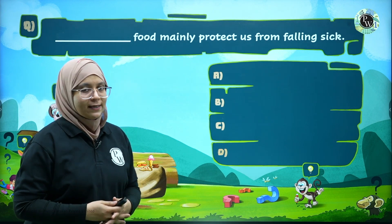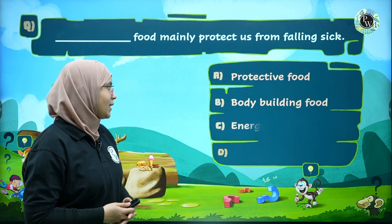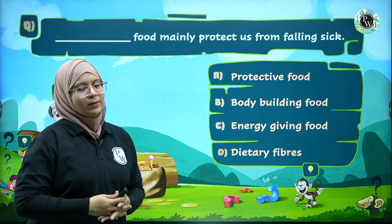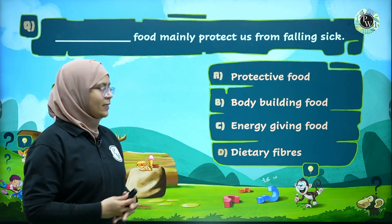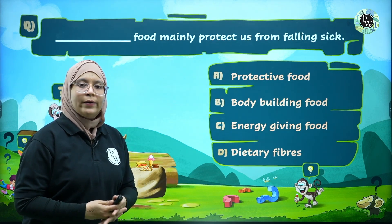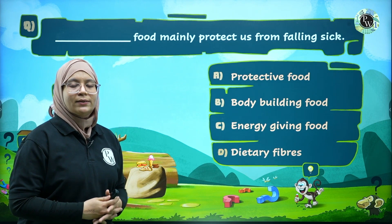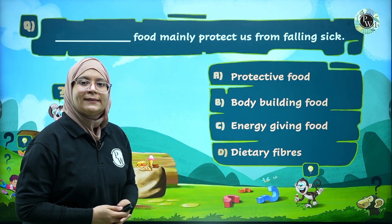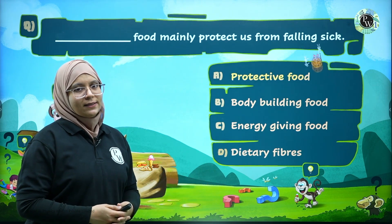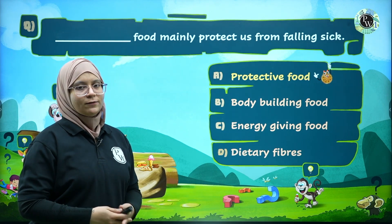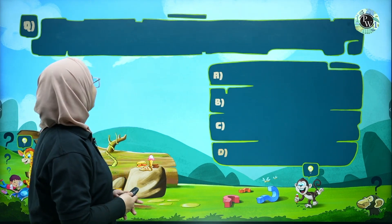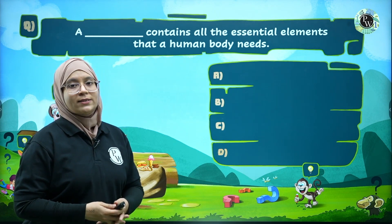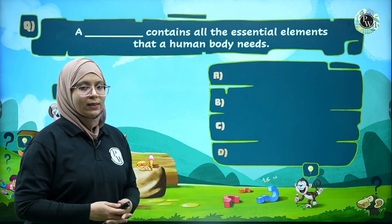Question 4: Which food mainly protects us from falling sick? Option A: protective food, Option B: body-building food, Option C: energy-giving food, Option D: dietary fibers. The correct answer is Option A — protective food.